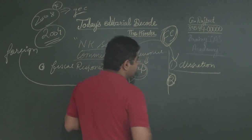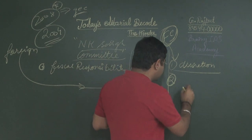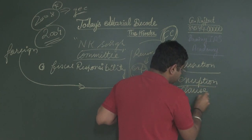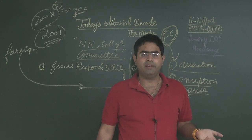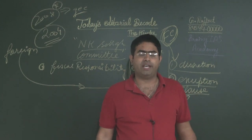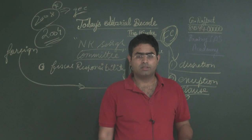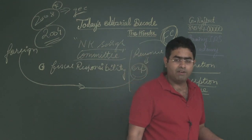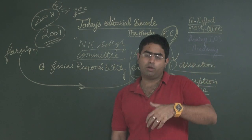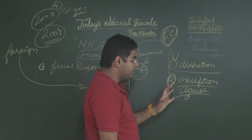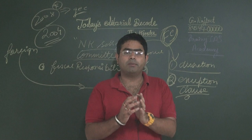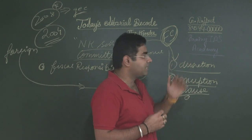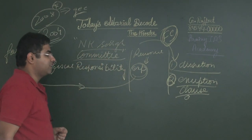The second important recommendation of the NK Singh Committee is instituting an exception clause. There might emerge situations where the country has to face certain challenges — due to climate change, war, or drought — in which the government will require to spend more. These exceptions are situations during which the government should be spending more and can deviate from the fiscal path set by the fiscal committee.